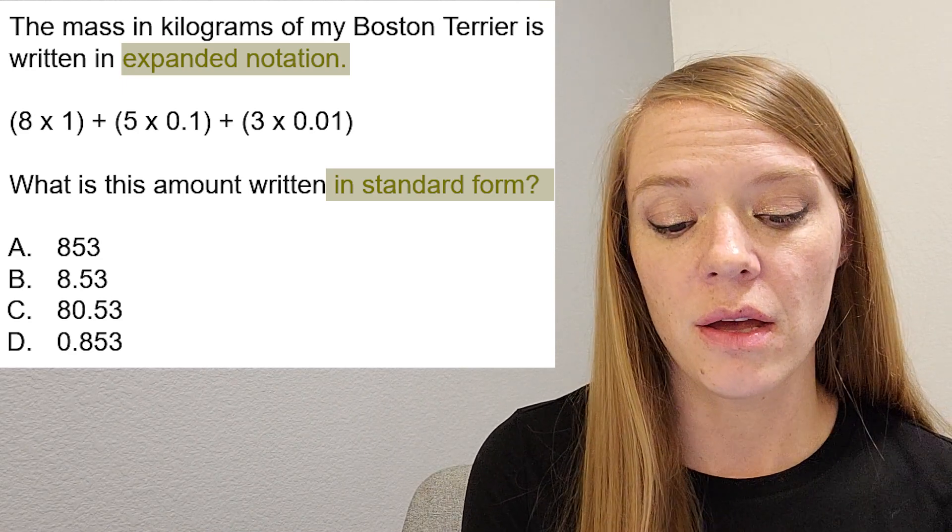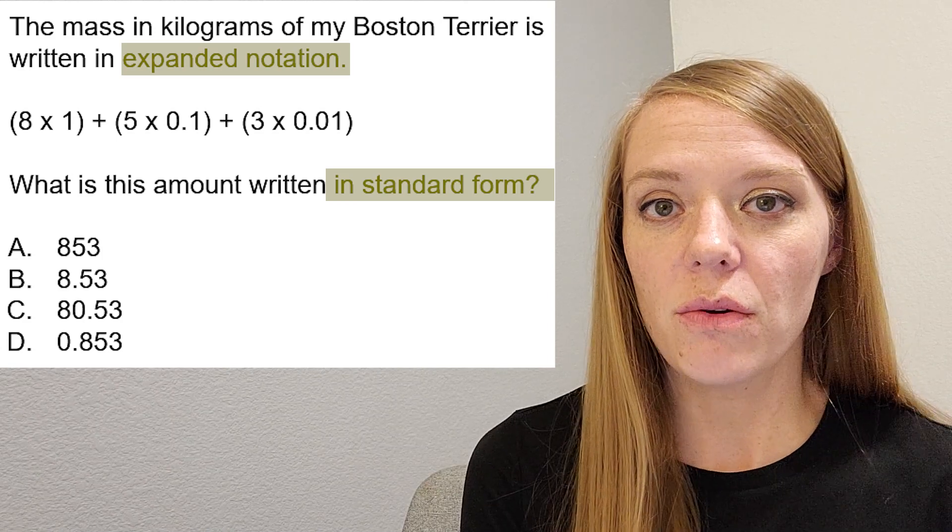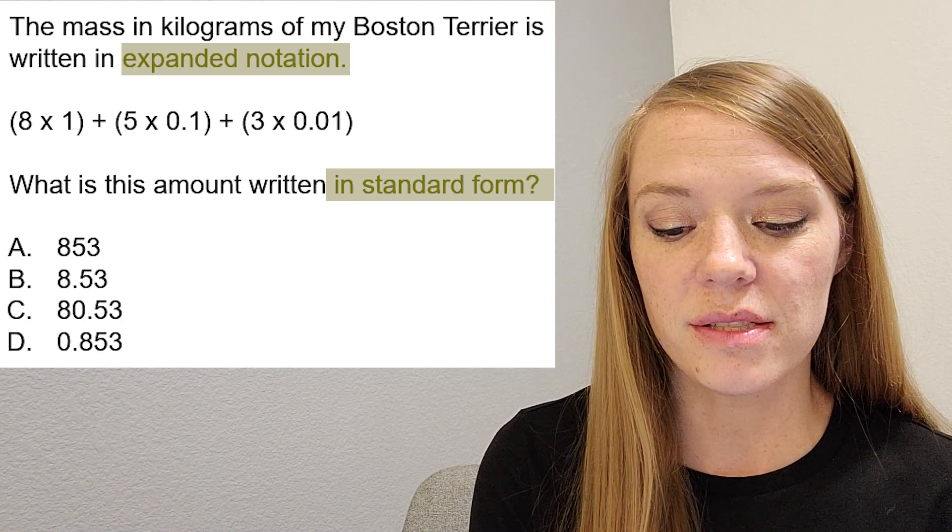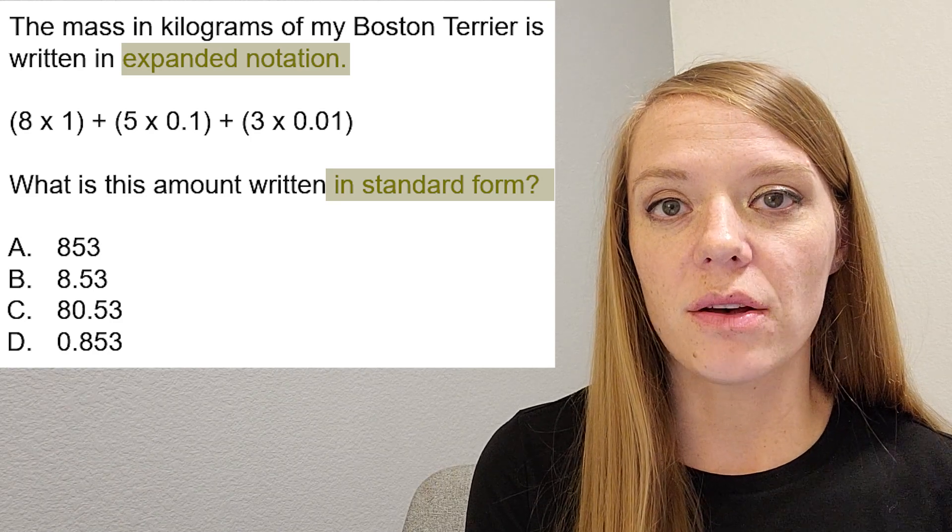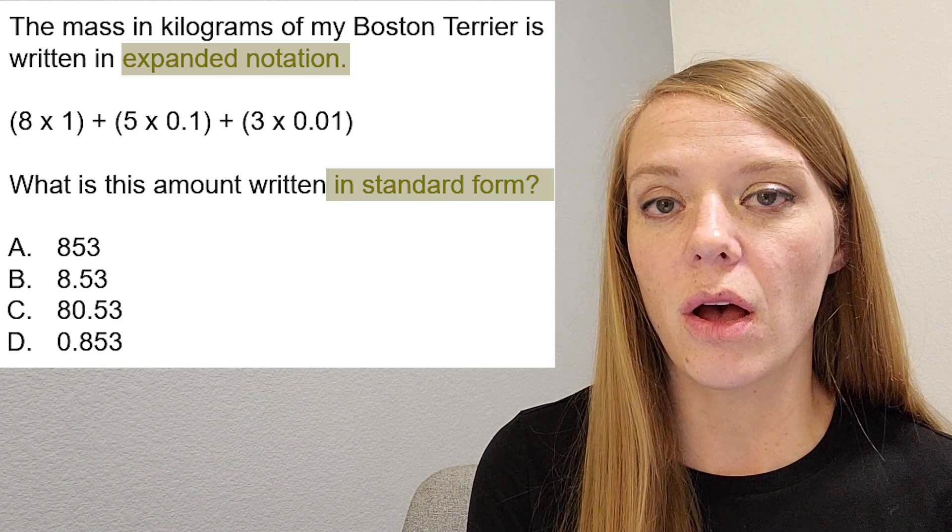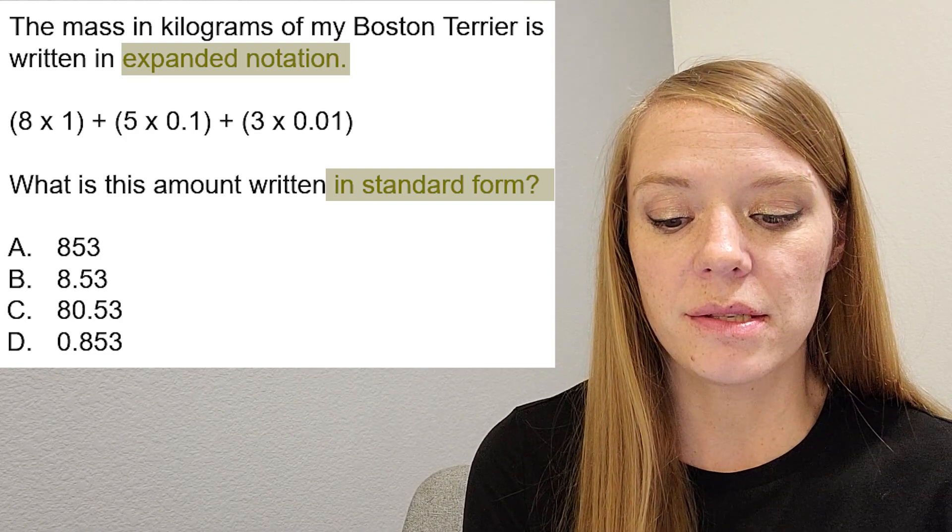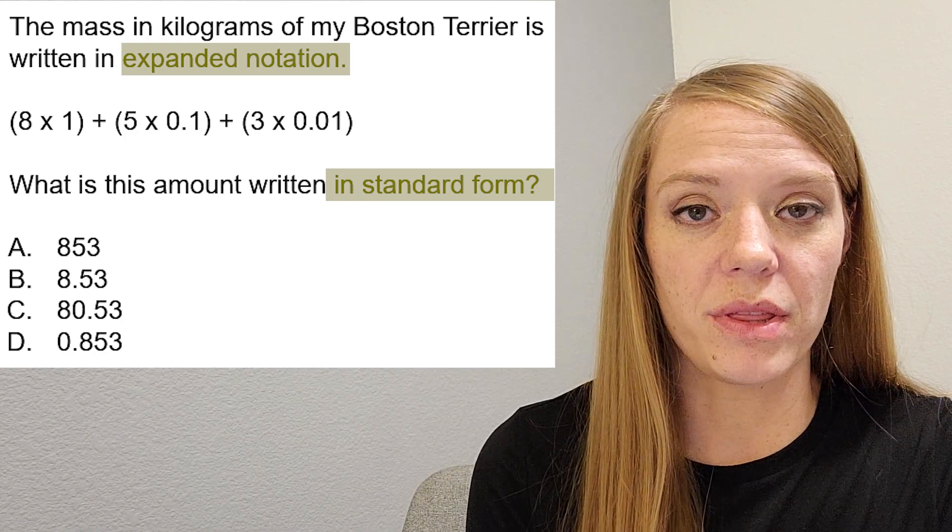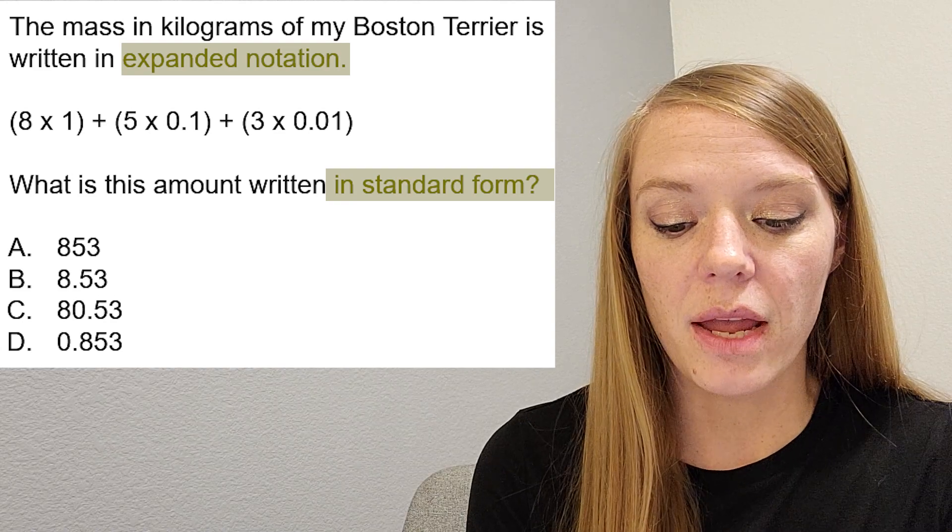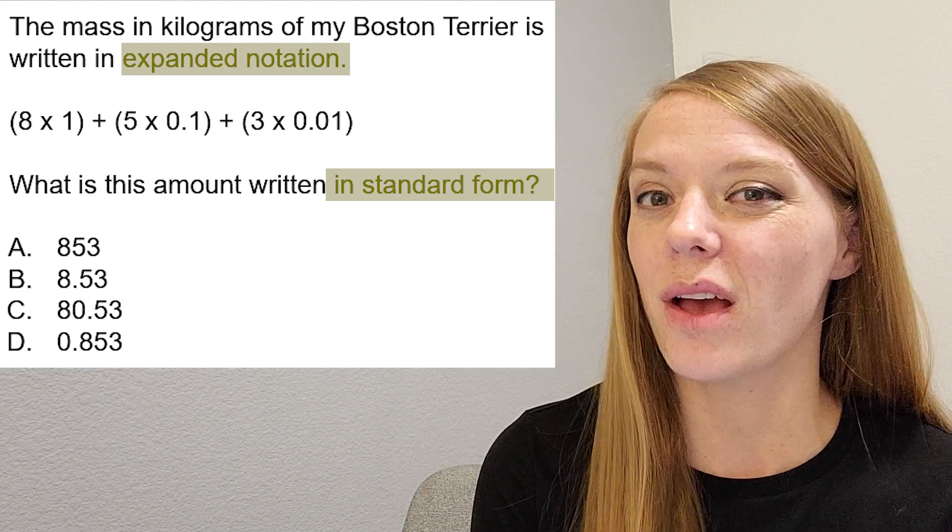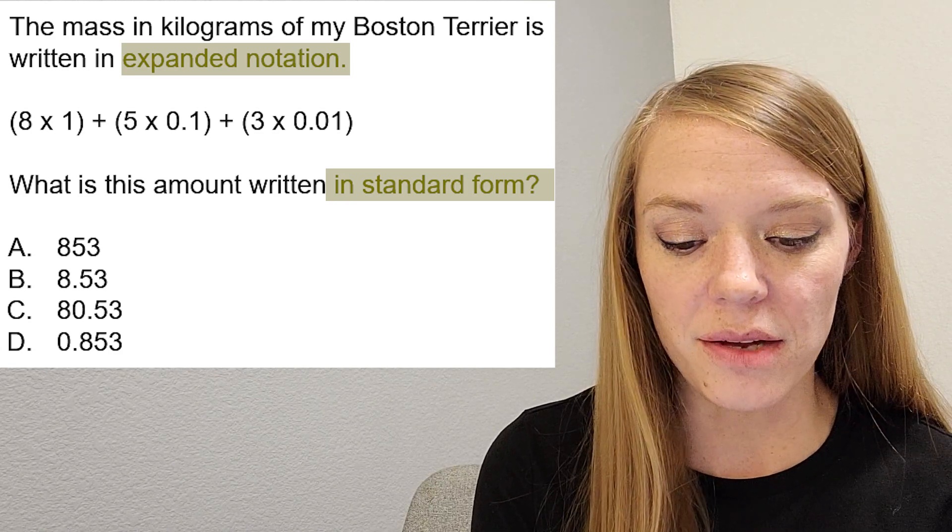But even if you didn't know, the cool thing about this problem is that even if you didn't know what that was, you probably still can just move along. You know that something has a mass in kilograms with the expanded notation. And we can go ahead and work with those numbers, even if we don't know what the object is. So that's great about that.